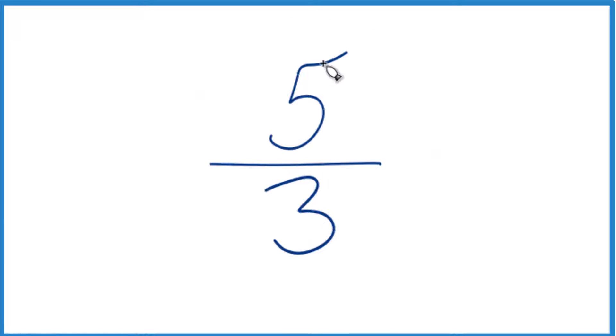So we could just use a calculator, 5 divided by 3, that would give us the answer. And we know that 5 is larger than 3, so our answer should be larger than 1. So let's do this long division and figure it out.